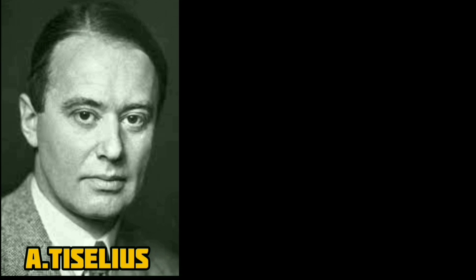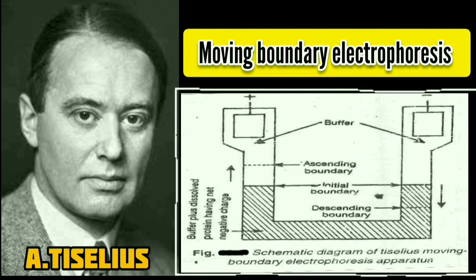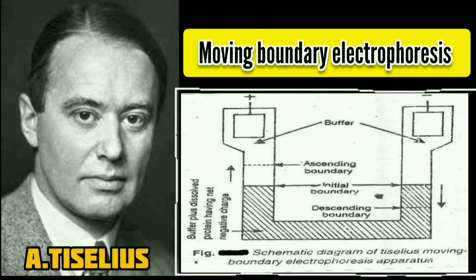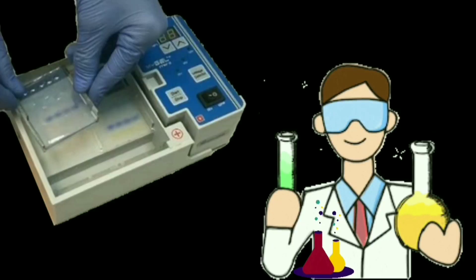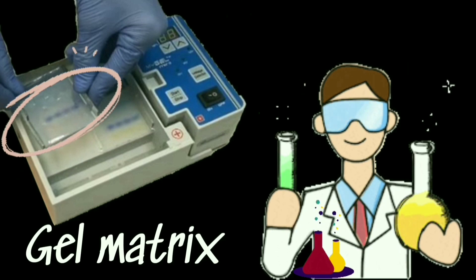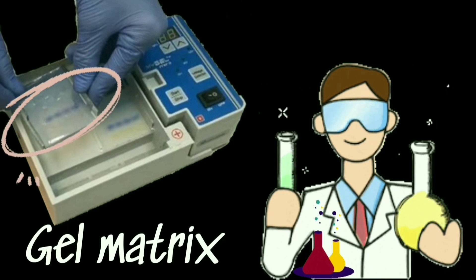Tisselius invented the technique in 1930. He performed experiments in free solution that were severely limited by the effects of diffusion and convection currents. This is also known as moving boundary electrophoresis, generally used for analysis, not for the fractionation of complex mixtures. In modern labs, we use a polymerized gel-like matrix, which is more stable as a support medium — this technique is termed zone electrophoresis, used for both analytical and preparative purposes.